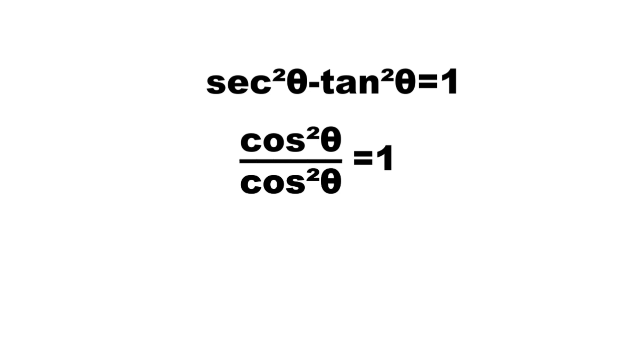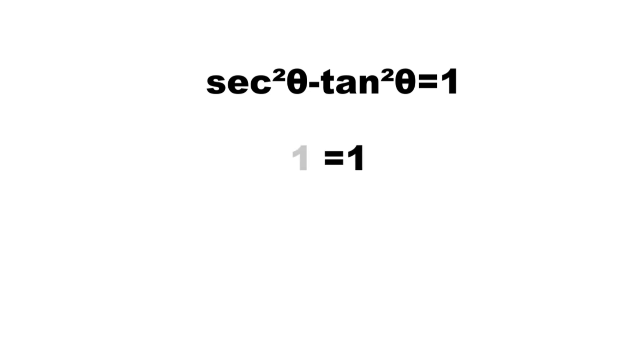Cosine squared theta over cosine squared theta is equal to 1, so 1 is equal to 1. This is the proof.